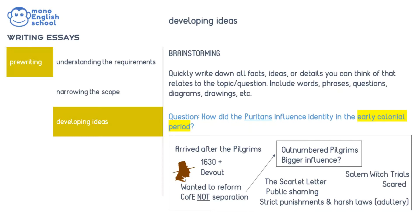Here is another example. The question is: 'How did the Puritans affect early colonial identity?' From brainstorming, you might note that the Puritans arrived after the Pilgrims, from 1630 onwards, and differed from the Pilgrims as they wanted to reform rather than separate from the Church of England. Eventually there were more non-separatists than separatists, so you could look at the greater influence of the Puritans. You might also note the Scarlet Letter, which shows some harsh laws and punishments, and the Salem Witch Trials, which indicate a lack of knowledge, perhaps fear and paranoia – all of which you could research.